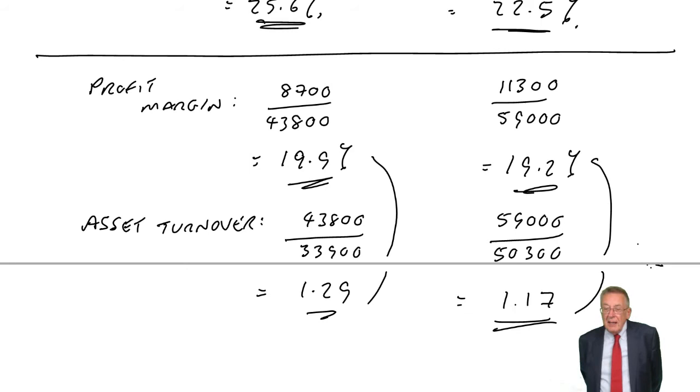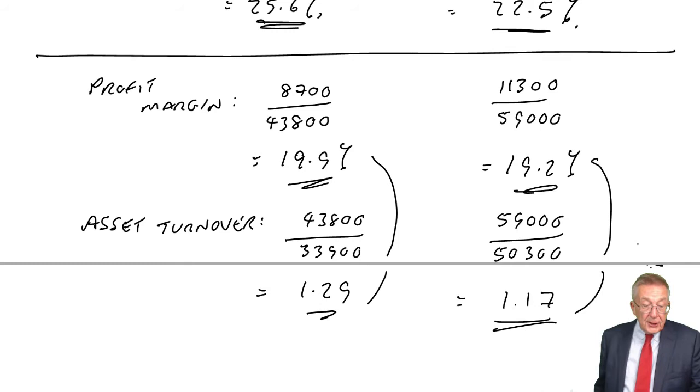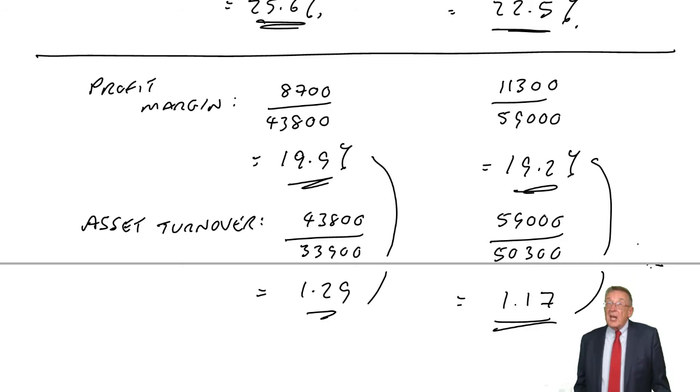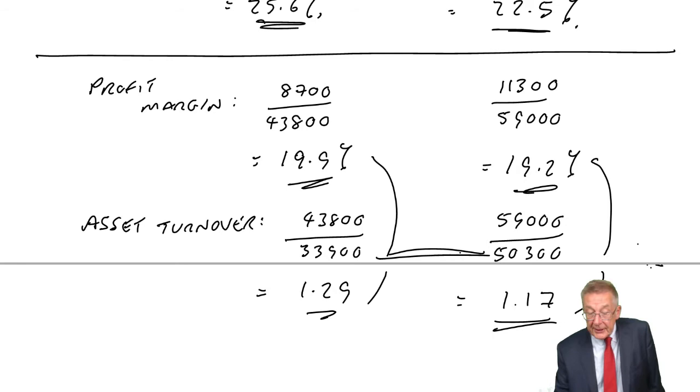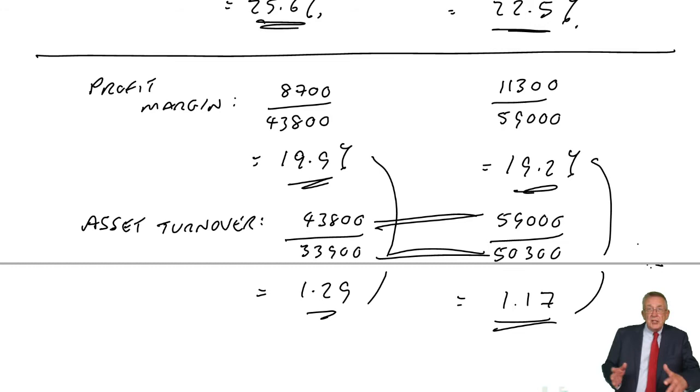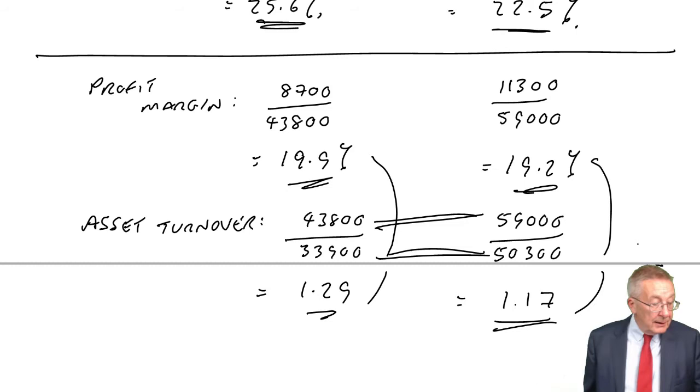Remember the company did have a rights issue in the third year. In the third year, the company suddenly became a lot bigger. Presumably that was invested in more assets, presumably more non-current assets. And it may take a while for the new assets to start earning good money. That could be the problem. The assets have gone up a lot. Hopefully, they will generate more revenue, but perhaps the full benefit is yet to come through.